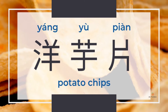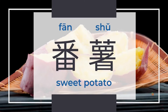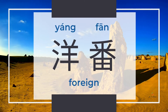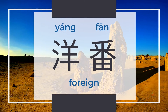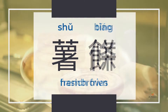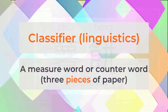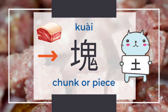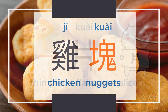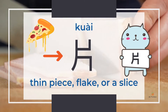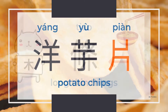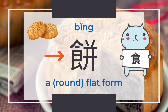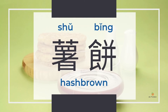Potato chips are 薯片. Sweet potatoes are 番薯 — 薯 means potatoes or yams, and 洋 and 番 relate to 'foreign' because potatoes originally came from other countries. 薯條 means french fries, and 薯饼 means hash browns. These names also teach us classifiers: 块 for chunks or pieces (鸡块), 片 for thin slices (薯片), 條 for long thin things (薯條), and 饼 for round flat forms (薯饼).